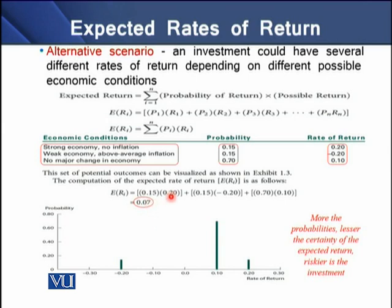If we plot these probabilities and rates of return on a figure, we see that for each probability we have a given rate of return, and we plot this as a probability curve. As we have more possible outcomes with equal probabilities, there is greater uncertainty in the expected returns. More possible outcomes with lower individual probabilities make the investment riskier.